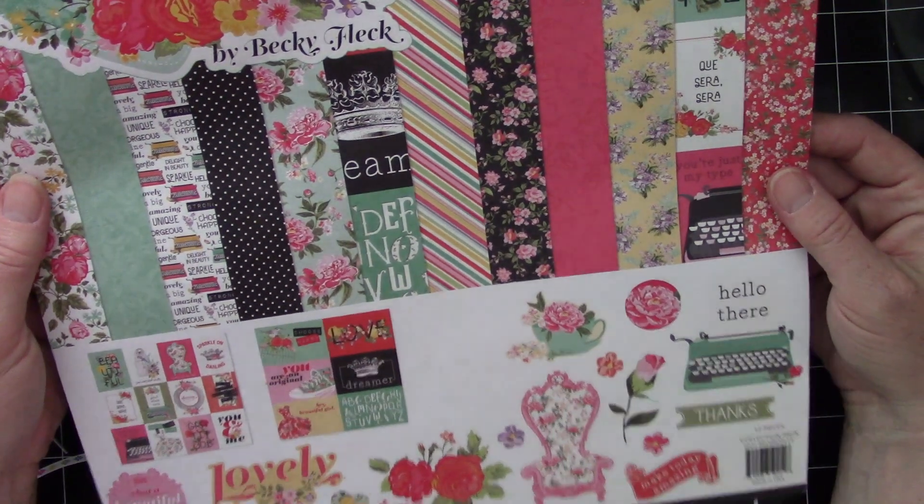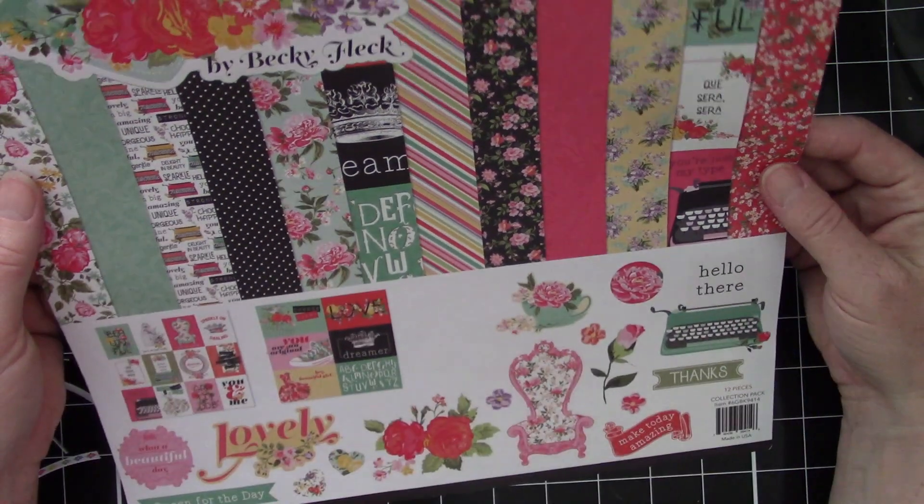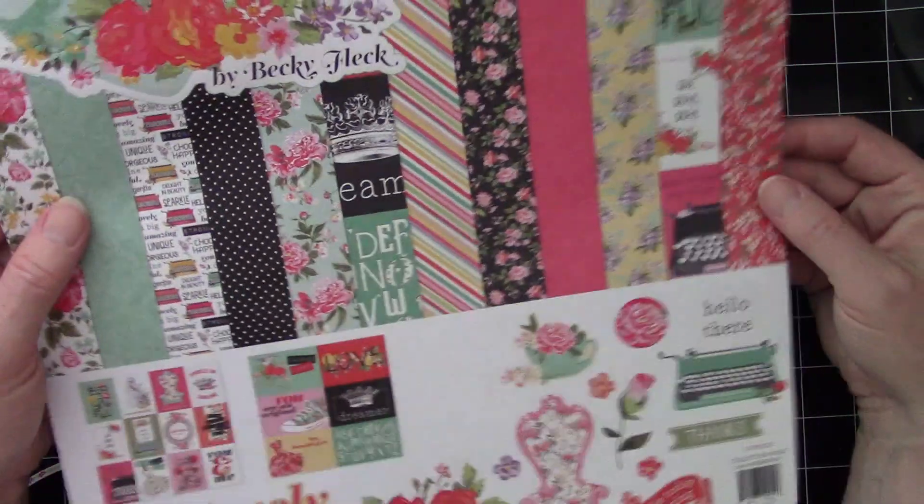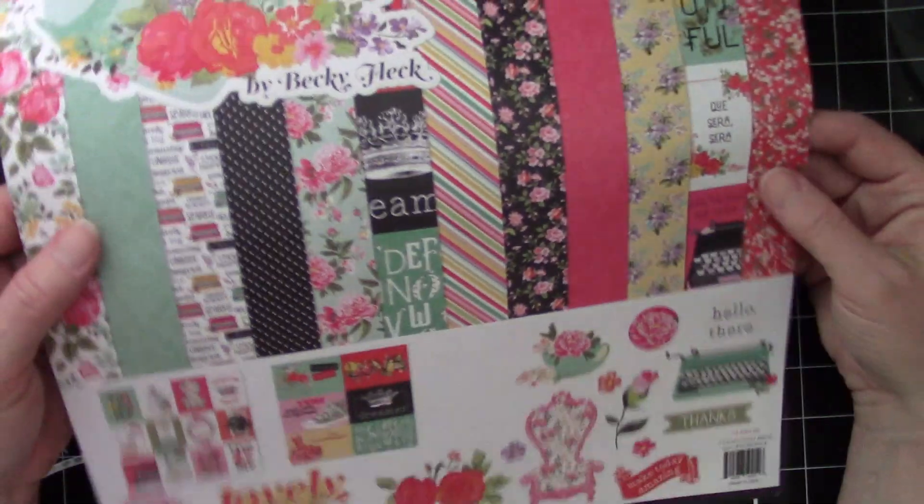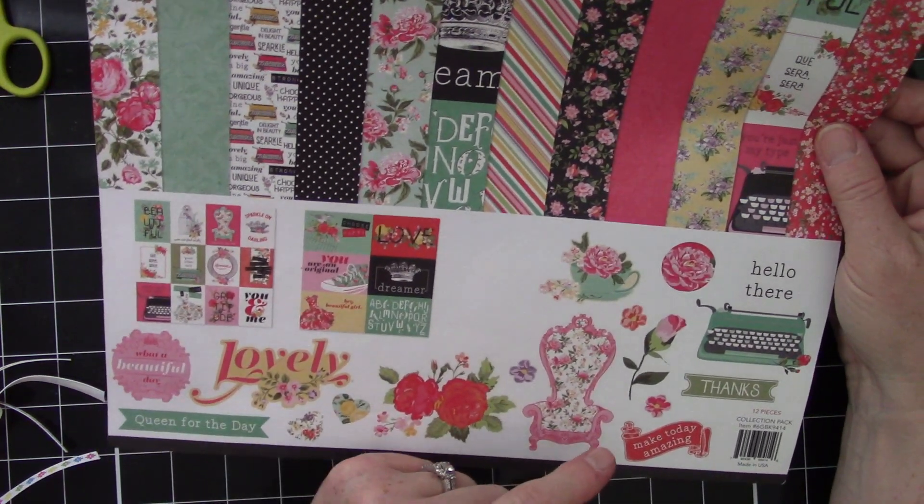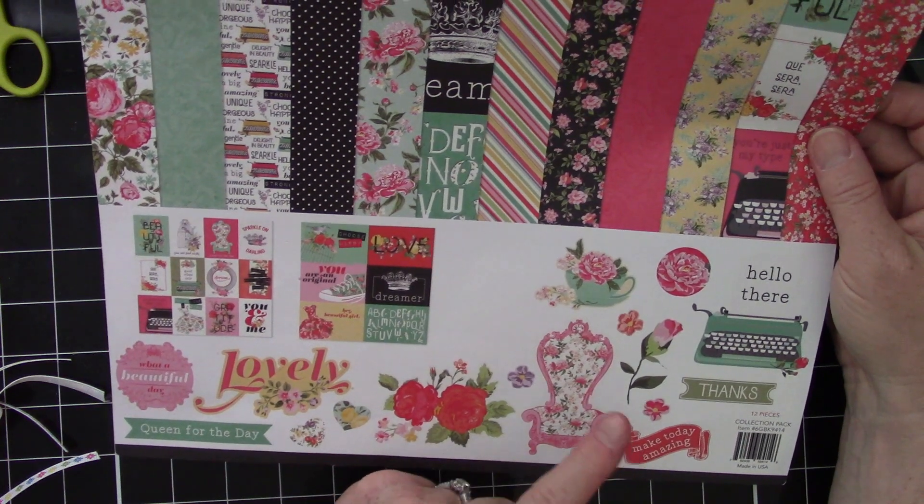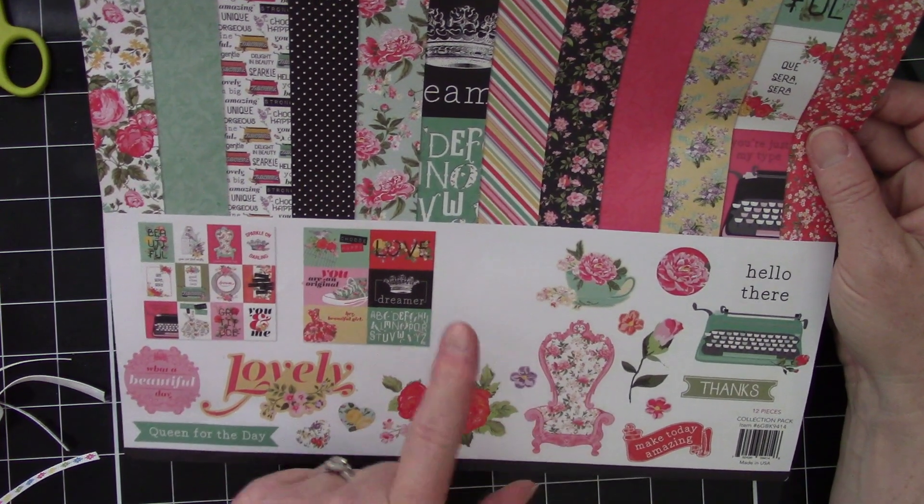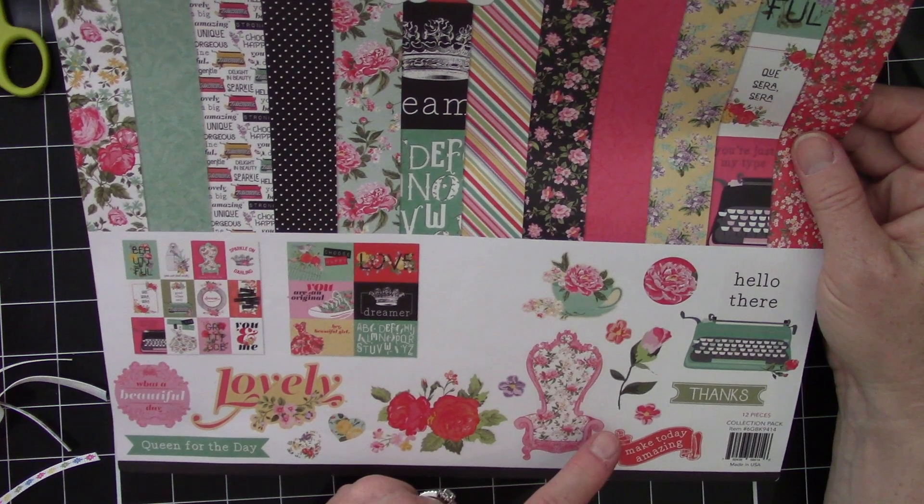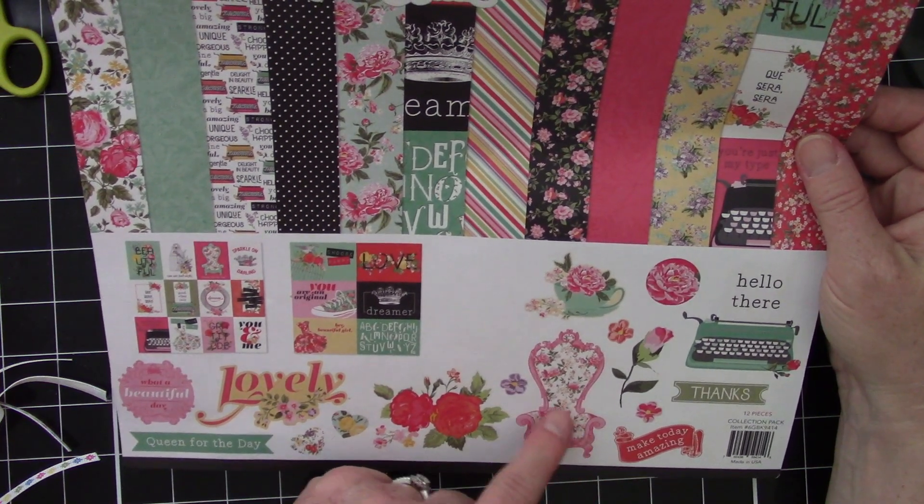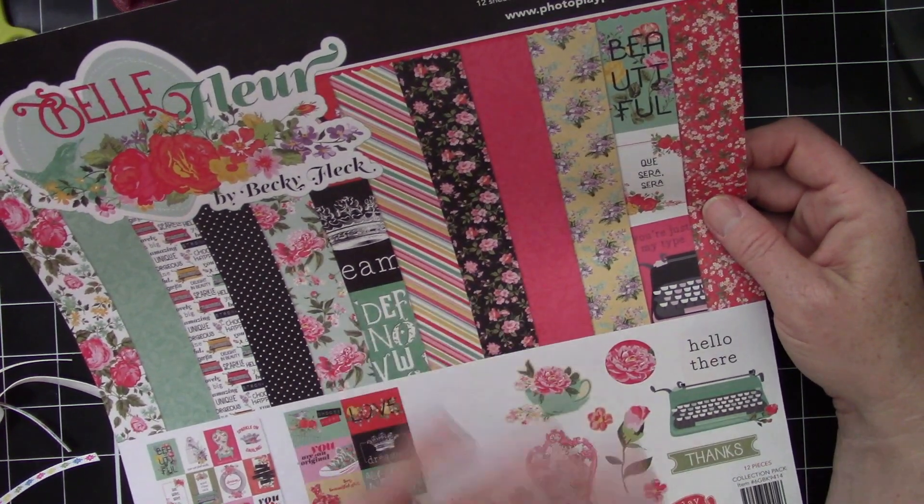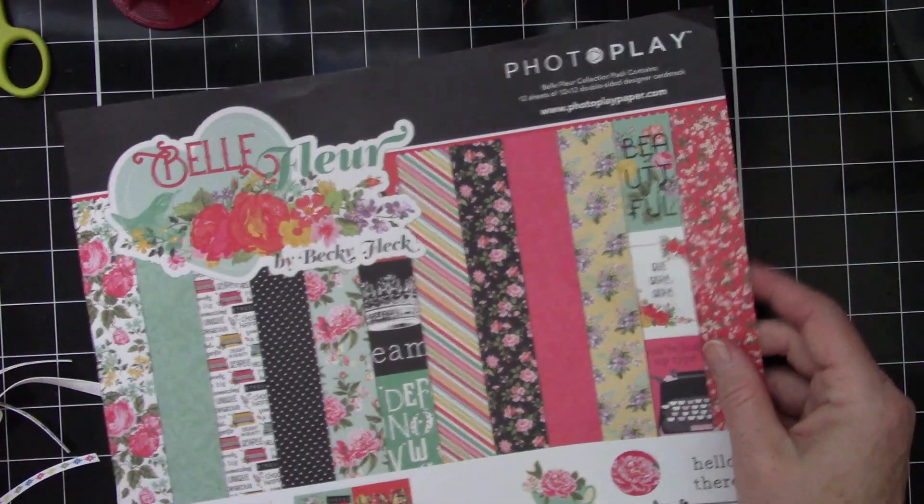If you want to see some other things that I made with this, there are some other videos as well. It does have a cover sheet, so this is what the paper pack originally looked like. Mine did not have stickers, I think it just had the cut aparts. I think I got this free at a scrapbook expo at the photo play booth. So it just was 12 sheets of 12 by 12 paper.